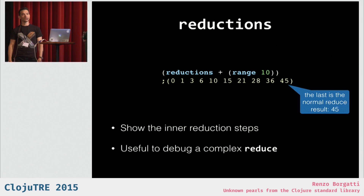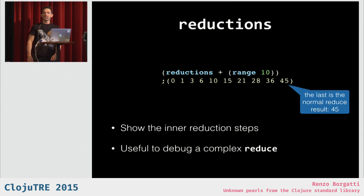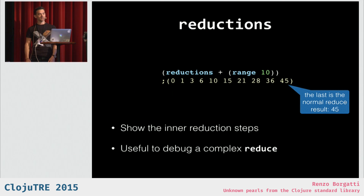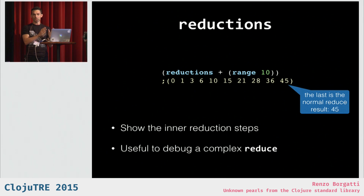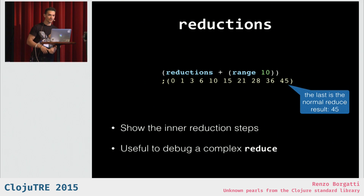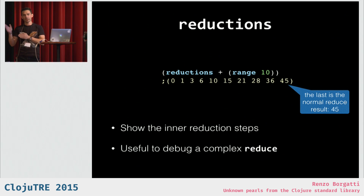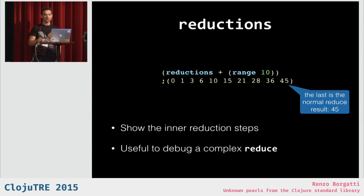Next pearl: `reductions`. `reductions` is very similar to `reduce`, but instead of just showing you the final result — in this case 45, the final element of the list — it shows you all the intermediate steps. It's useful to understand what's going on when you have a complicated reducing function. And if you do `last` of that list — `last` of `reductions` of `+` and `range 10` — that is equivalent to `reduce + (range 10)`.